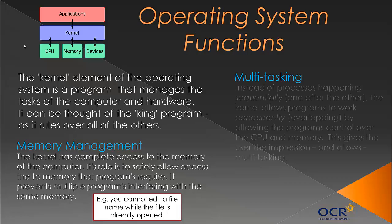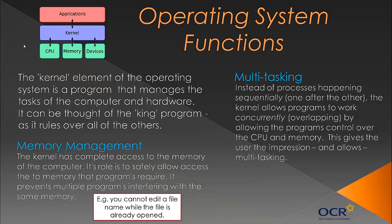The kernel also plays an important role in multitasking. Instead of processes happening sequentially — one after the other — the kernel allows programs to work concurrently, meaning they can overlap. They're not running in parallel exactly, but they are overlapping slightly, using one function of the CPU at one time, then another program uses another section of the CPU. This gives the user the impression of multitasking — you can have lots of programs open and processes happen concurrently, almost at the same time.